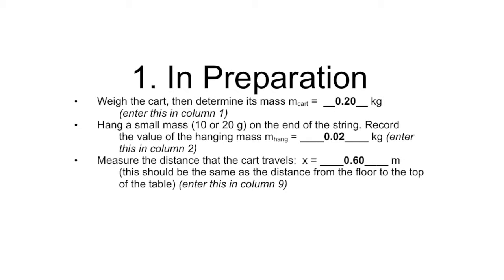Measure the distance that the cart travels, which x for this experiment is 0.6 m. This should be the same as the distance from the floor to the top of the table. Enter this in column 9.